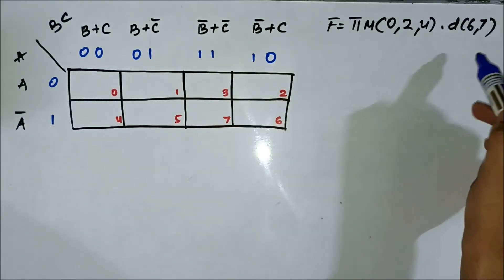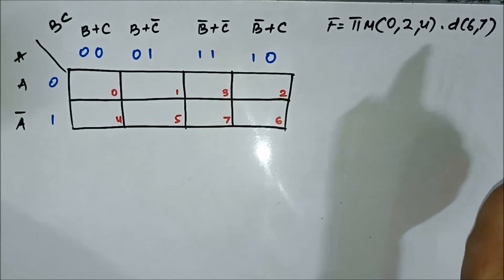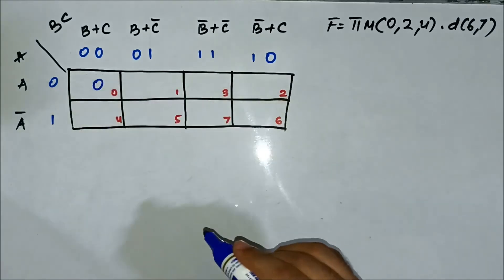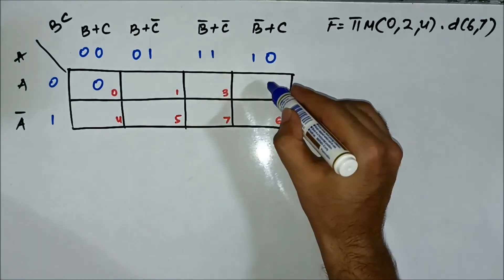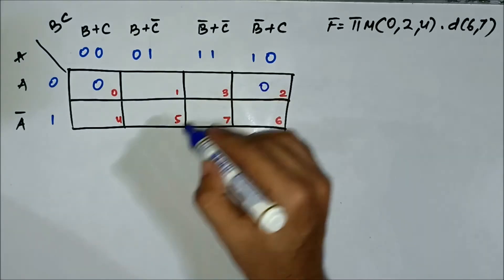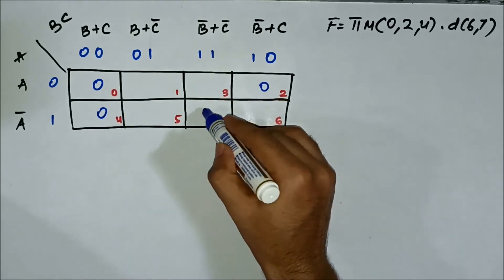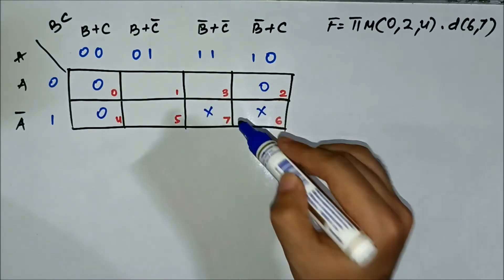0, 2, 4 and the don't care values are 6 and 7. The max term values those cells will mark as 0, 2 and 4 and here it is 6 and 7 don't care condition.